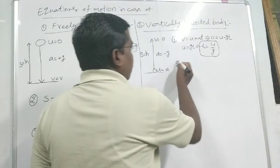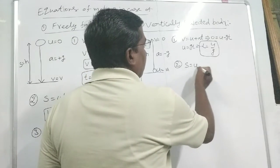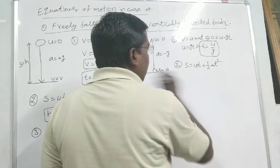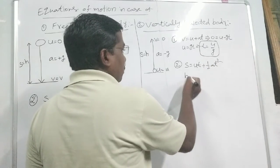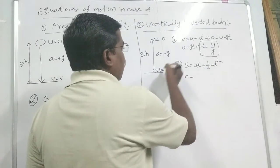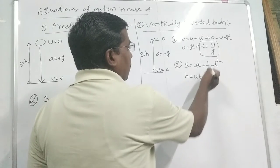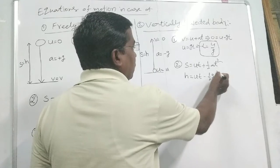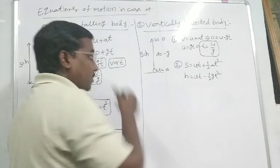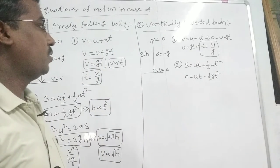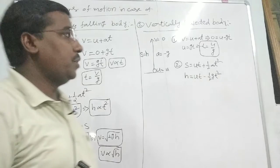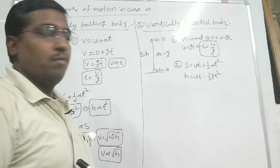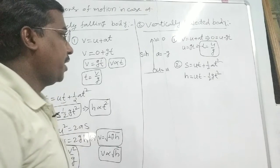The second equation of motion is S = UT + ½aT². Substituting S = H and A = −g, we get H = UT − ½gT². By using this formula we find the height for a vertically projected body.